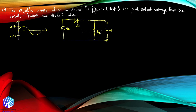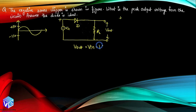Because it is a negative clipper, the diode is oriented in the forward direction for the positive half cycle, so it clips out the negative portion — it removes the negative portion of the input AC signal. During the positive half cycle, the diode is forward biased and is replaced by a short circuit. So V_output equals V_in, and the maximum output voltage is 15 volt.